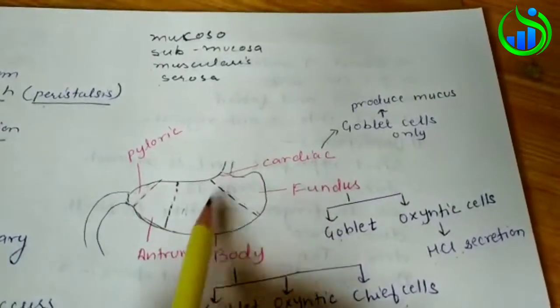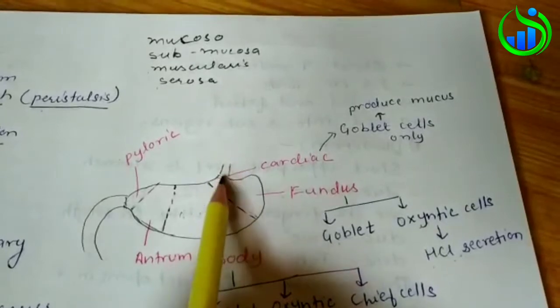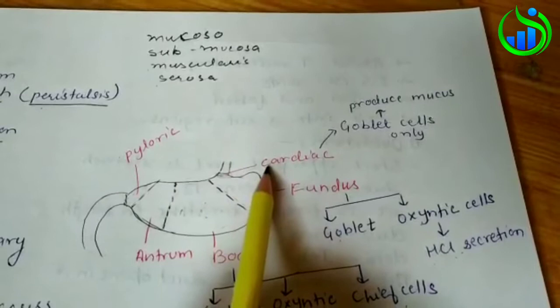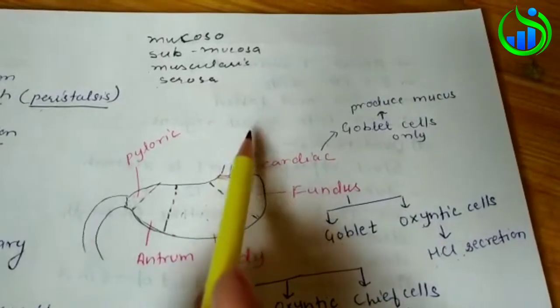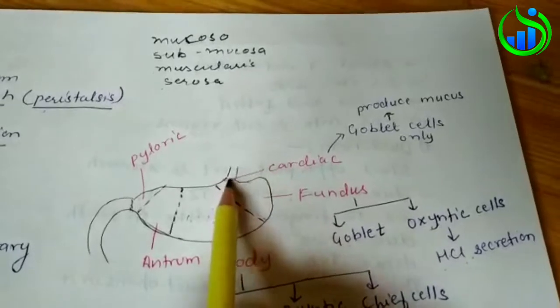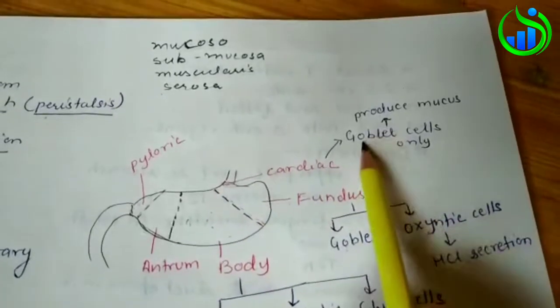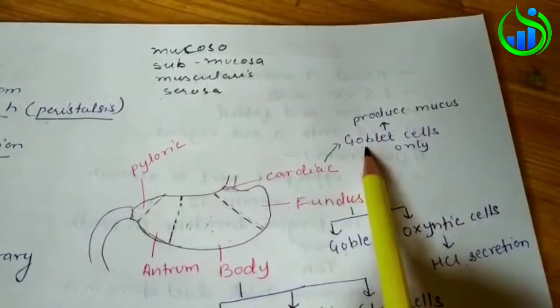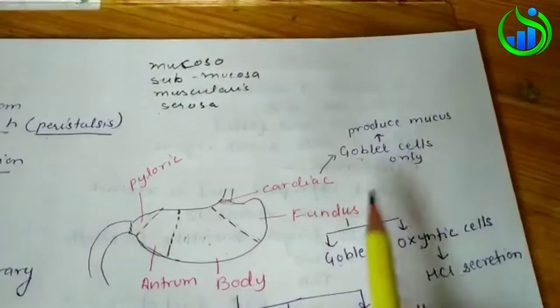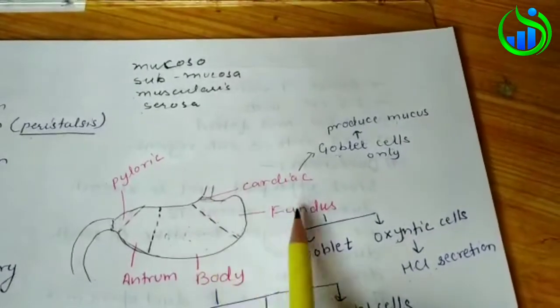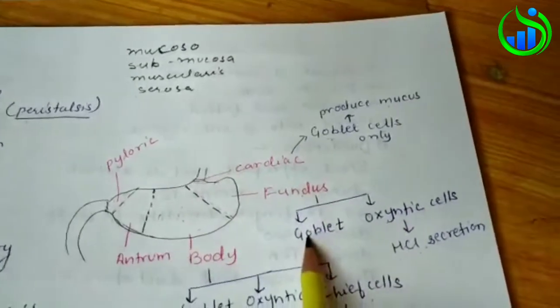The stomach is divided by parts. The region near the esophagus is called cardiac. Cardiac relates to heart. This cardiac region contains goblet cells whose role is to produce mucus. The next region is the fundus, which also contains goblet cells.